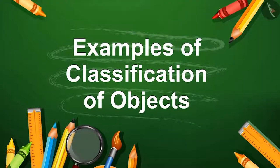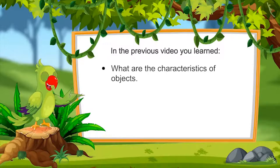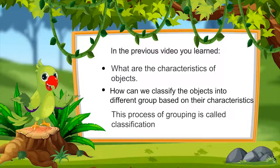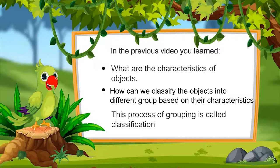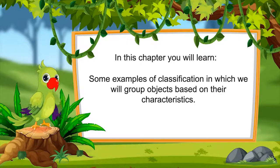Children, in the previous video you learned what the characteristics of objects are, and on the basis of characteristics how we can classify objects and make different groups of them. You also learned that this process of grouping based on characteristics is called classification. In this video we will see some examples of classification, in which we will group objects based on their characteristics.